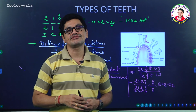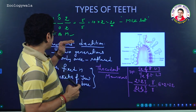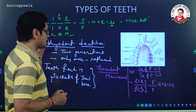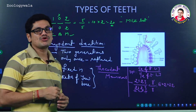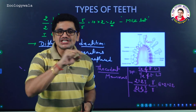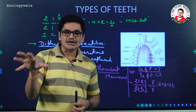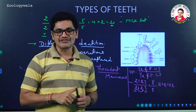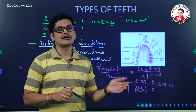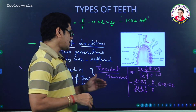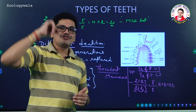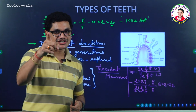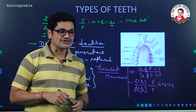In human beings, diphyodont dentition is observed. In monophyodont dentition, only one generation of teeth is observed, seen in some types of whales where teeth occur only once in their lifetime and are not replaced if damaged. Opposite to all these is polyphyodont dentition, where teeth are replaced many times. An example for polyphyodont will be covered in the next video.